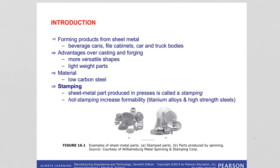Products made of sheet metals are all around us. Examples are beverage cans, cookware, file cabinets, metal desks, appliances, car and truck bodies, and trailers. If we compare sheet metal forming to other techniques like casting and forging, sheet metal parts offer the advantage of versatile shapes, light weight, and high stiffness-to-weight ratios. You can see examples of stamped sheet metal parts and parts produced by spinning.